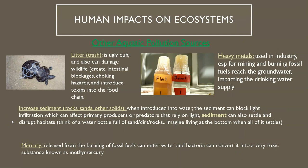Here are some other aquatic pollution sources. Litter is very ugly and can damage wildlife — it can cause choking, blockages in digestive systems, and introduce new toxins into the food chain. Heavy metals are used in mining and fossil fuels and can reach into groundwater and impact our drinking water supply, which is the case for Flint, Michigan. Increased sediment — things like rock, sand, and other solids entering the water — can block sun's infiltration, which means sunlight can't get into the ocean, affecting primary producers and predators that rely on light. Sediment can also settle and disrupt a habitat.